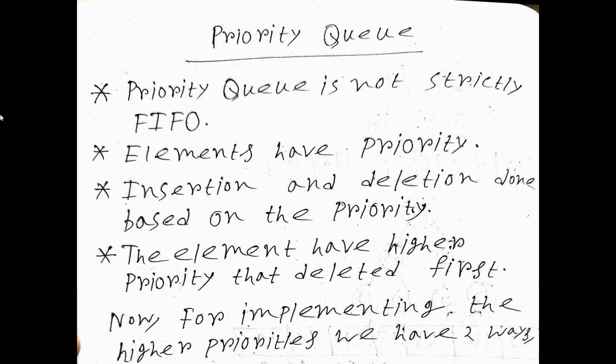To summarize the four points of priority queue: first, priority queue does not strictly maintain the FIFO property. Second, every element has its own priority. Third, insertion and deletion is done on the basis of priority. Fourth, the element having higher priority is deleted first.